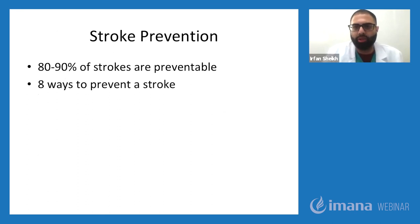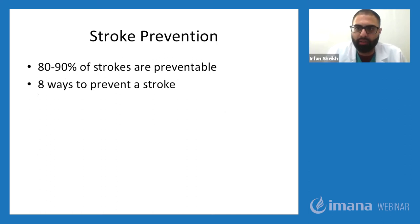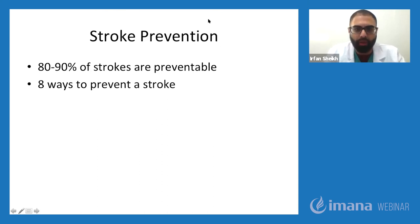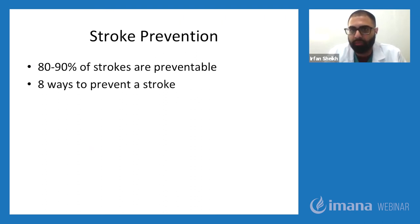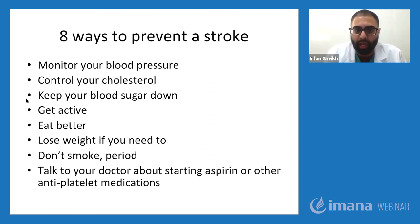Activity is also very important. Immobilization can increase the risk for stroke. The American Heart Association recommends at least 150 minutes of moderate intensity physical activity per week — that's 30 minutes a day, five times a week. You can walk, do light jogging, yoga, or tai chi.